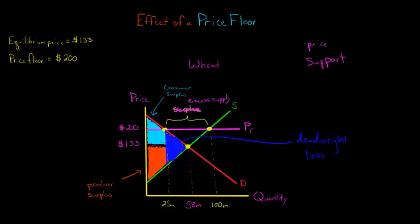The total surplus used to be that whole triangle — consumer surplus plus producer surplus. But now this part of the triangle is gone. There's also been a shift: because the price floor is higher, there's a transfer from consumers to producers. Producers get this additional orange area — that's now producer surplus. The consumer surplus has shrunk to just this tiny blue triangle, and the dark blue area belongs to nobody — that's the deadweight loss.